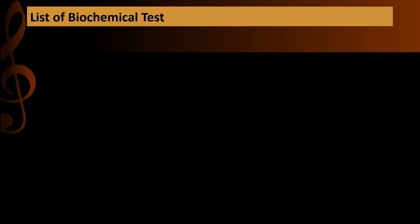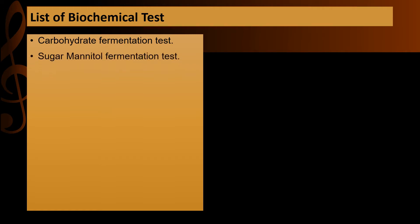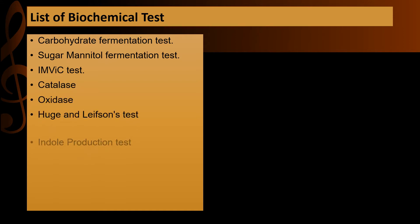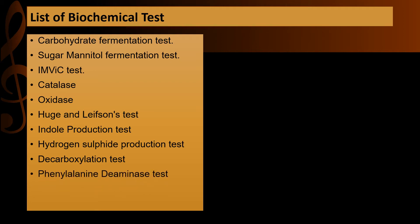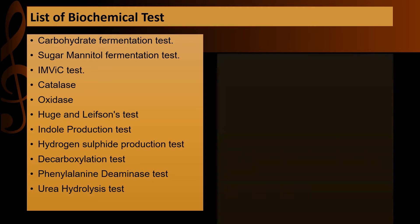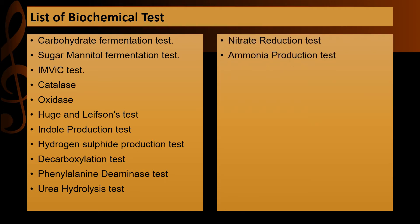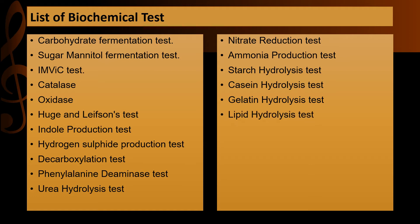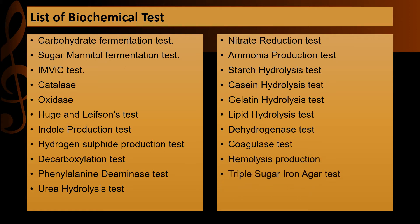Here is a list of biochemical tests: carbohydrate fermentation test, sugar mannitol fermentation test, MBC test, catalase test, oxidase, Hugh and Leifson test, indole production test, hydrogen sulfide production test, decarboxylation test, phenylalanine deaminase test, urea hydrolysis test, nitrate reduction test, ammonia production test, starch hydrolysis test, casein hydrolysis, gelatin hydrolysis, lipid hydrolysis, dehydrogenase test, coagulase test, hemolysis production test, triple sugar iron agar test, litmus test, and lysine decarboxylation test. These are the various tests carried out on newly isolated microorganisms.